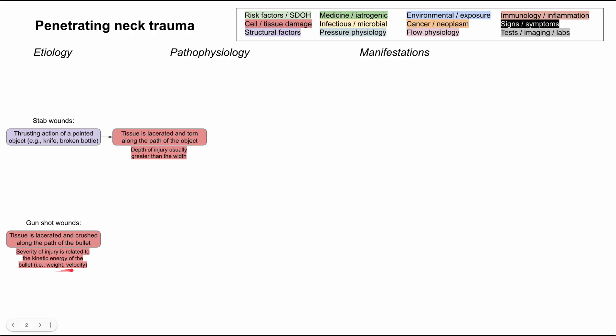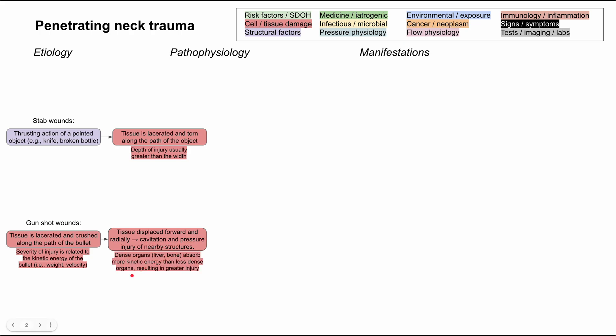Both of these factors — the weight and the velocity of the ballistic missile — can help you compute how much energy, how much damage is going into the gunshot wound. The tissue is displaced forward and radially, causing cavitation and pressure injury of nearby structures. Dense organs like liver and bone will absorb more kinetic energy and be damaged more than less dense organs like skin or fat tissue.